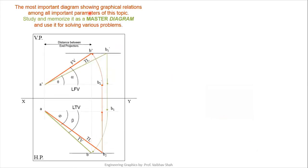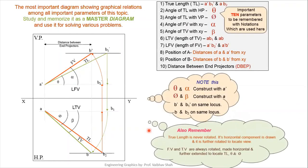The most important diagram shows the graphical representation among all important parameters of this topic. Let us study and memorize it as a master diagram and use it for solving various problems. This is your master diagram — you have to memorize it. If you memorize this master diagram, I guarantee you can solve any of the examples in the further sections.